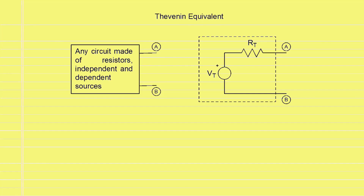The circuit on the left can be replaced by the circuit on the right, which consists of an independent voltage source of value VT in series with a resistor of value RT. The circuit on the right is also enclosed in a box and it has two terminals A and B coming out of the box. Both circuits have the same behavior at the terminals A and B, regardless of what is connected to these terminals.